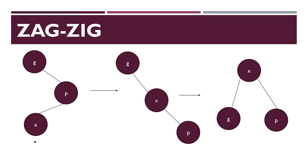Next is zag-zig rotation. First, we need to perform zag rotation. After that, we need to perform zig rotation. Here we have nodes G, P and X. By performing zag rotation, the nodes will be G, X and P — X and P are exchanged. After performing zig rotation, the nodes will be X, G and P, because node G is towards the left side of X. So this is zag-zig rotation.